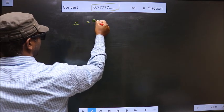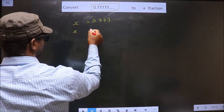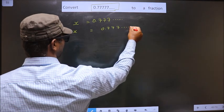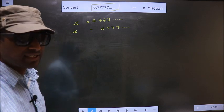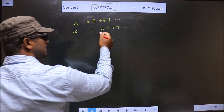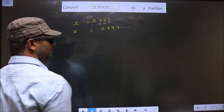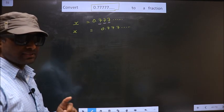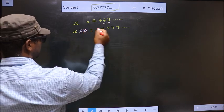So x equals 0.777 repeating. Now check how many numbers are being repeated in this recurring decimal. Only 7 is being repeated - only one number is being repeated. Whenever only one number is being repeated, you should multiply by 10 on both sides.